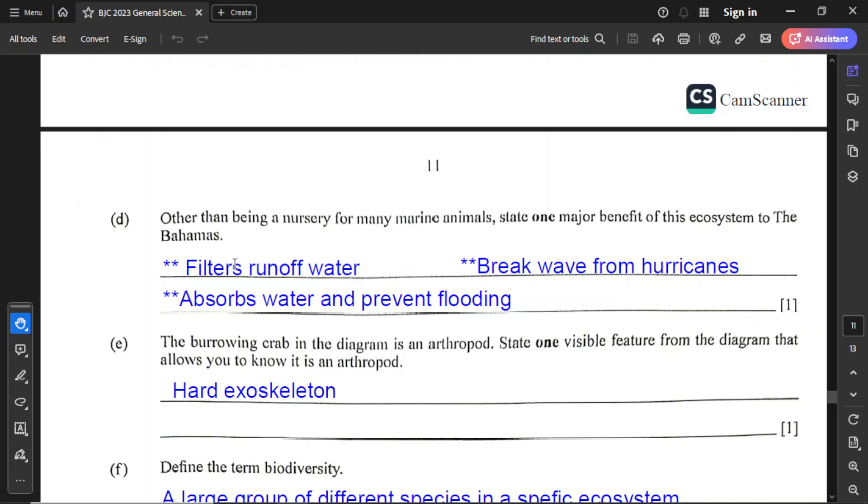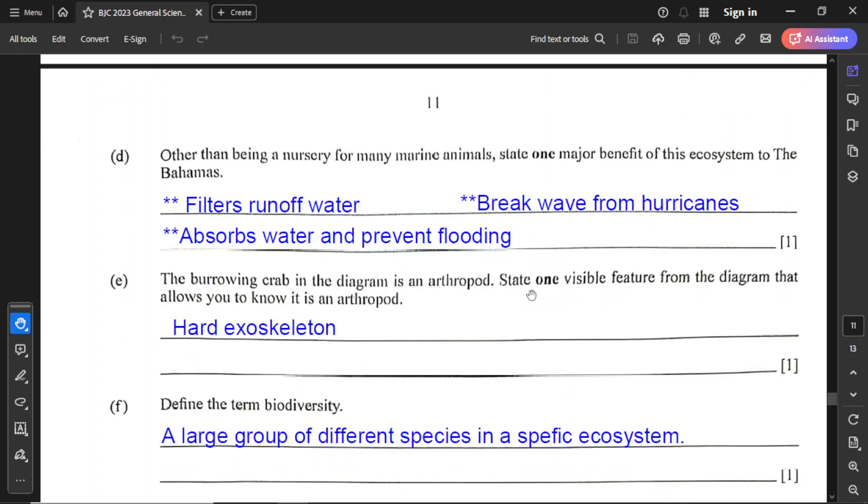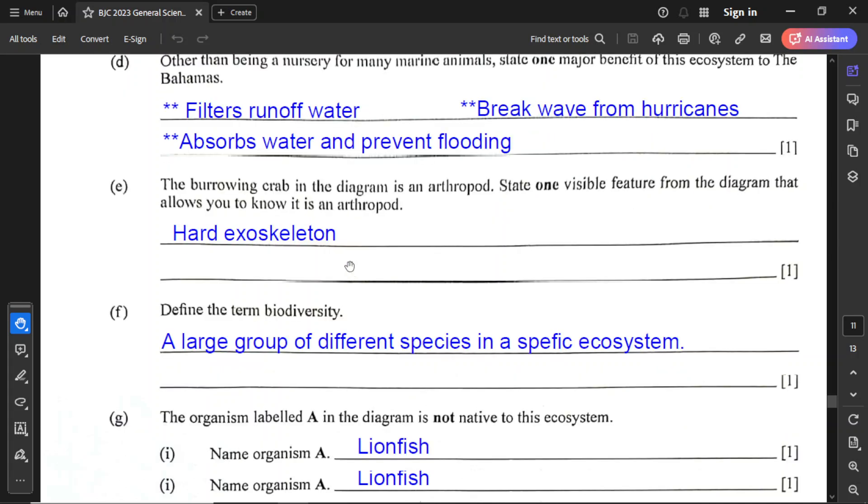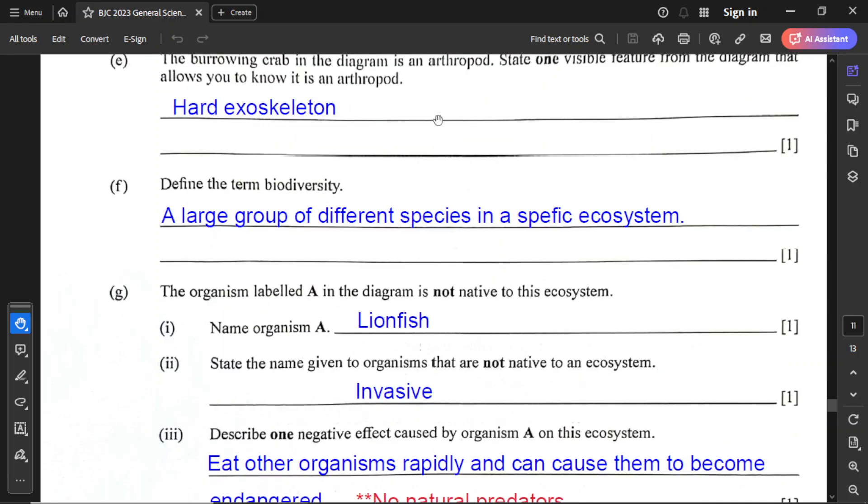For part D, other than being a nursery for many marine animals, state one major benefit of this ecosystem to the Bahamas. One, it filters runoff water. It's used to absorb water and prevents flooding. Also, it breaks waves from hurricanes. For part E, the boring crab in the diagram is an arthropod. State one visible feature from the diagram that allows you to know it is an arthropod. The obvious structure on the crab is that it has a hard outer shell, or what they call a hard outer skeleton, which correct name is exoskeleton, hard exoskeleton. Define the term biodiversity. Biodiversity is a large group of different species in a specific ecosystem, which means they have many different kinds of organisms.